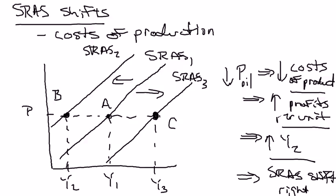If you think about it, the short-run aggregate supply curve is really a story about the cost of production. Decreases in the cost of production shift the short-run aggregate supply curve to the right; increases in cost of production shift it to the left. And when we talk about why the economy tends to return to potential output, this story is going to be critical — specifically, we'll be talking about nominal wages and how the labor market adjusts to move the economy to the long-run equilibrium.